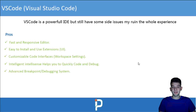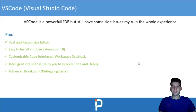VS Code has an advanced breakpoint debugging system which Atom might not have. If you're into debugging, VS Code has a full debugging system. You can run applications — especially Node.js — and the debugger will tell you if there are any bugs. You can set breakpoints and the debugger will tell you which breakpoint was triggered and when.